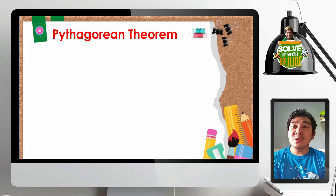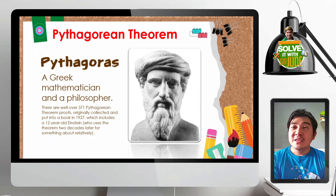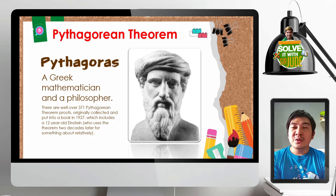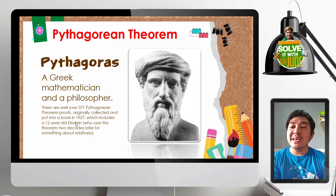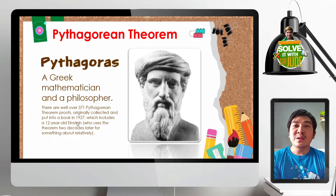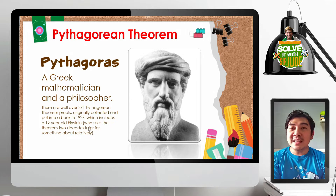This Pythagorean theorem is known because of Pythagoras — a Greek mathematician and philosopher. It is believed that there are over 371 Pythagorean theorem proofs, originally collected and put into a book in 1927. One of those who collected and compiled these proofs was Albert Einstein, when he was only 12 years old. He also uses this formula in the theory of relativity.